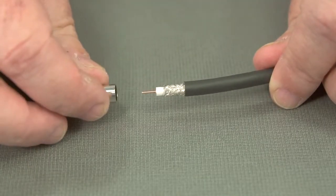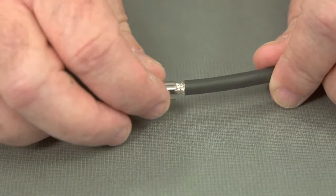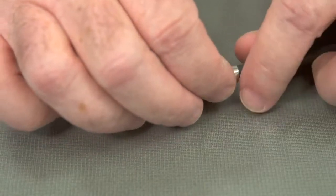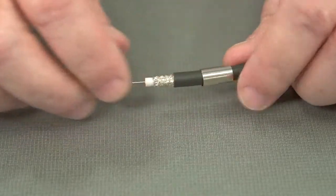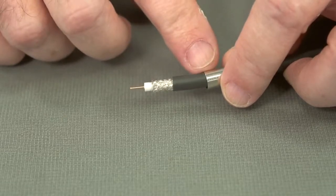So now that we have our cable stripped, the first step is to put our ferrule on. It's in place.